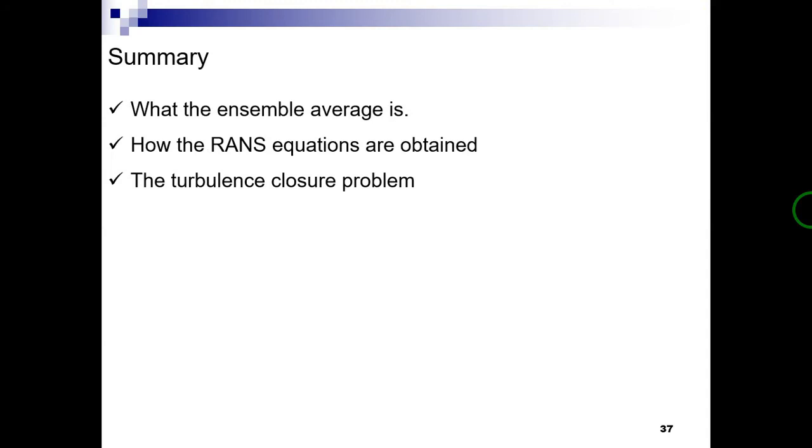So the summary of what I talked about in this introduction to RANS equations: we learned what the concept of ensemble average is and how it is different from the time average. It is worthy to mention that most of the time it is seen that the RANS equations are related to the time average, which is not correct. RANS equations are related to the ensemble average. We also understood how we can obtain the RANS equations from the Navier-Stokes equations using the ensemble average concept, and finally we learned what the turbulence closure problem is.